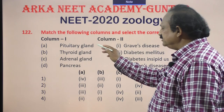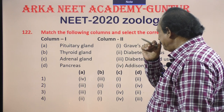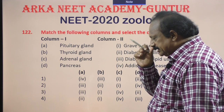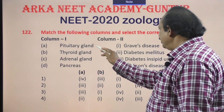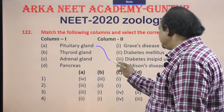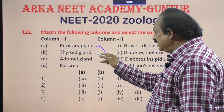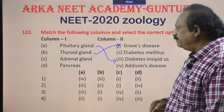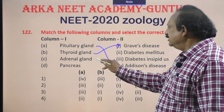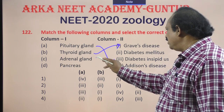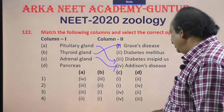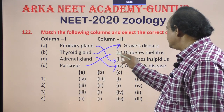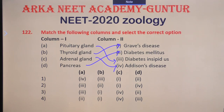The antidiuretic hormone is stored in the neurohypophysis of the pituitary gland; its deficiency causes diabetes insipidus. The thyroid gland produces thyroxine; overproduction causes Graves' disease or exophthalmic goiter. The adrenal gland secretes corticoids; their deficiency causes Addison's disease. The pancreas produces insulin; insulin deficiency causes diabetes mellitus.